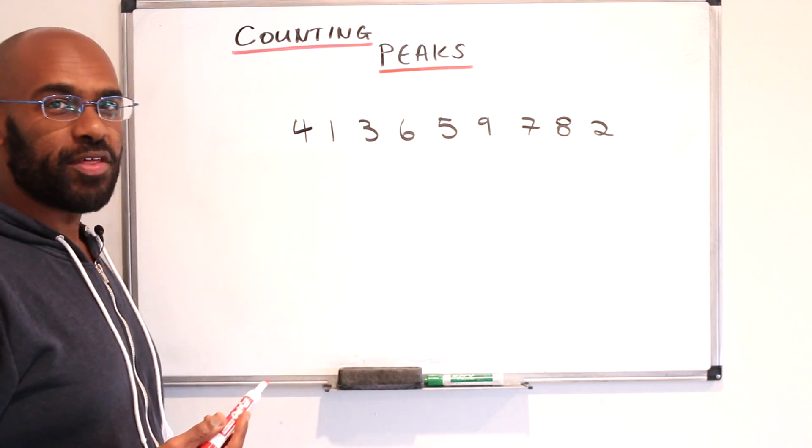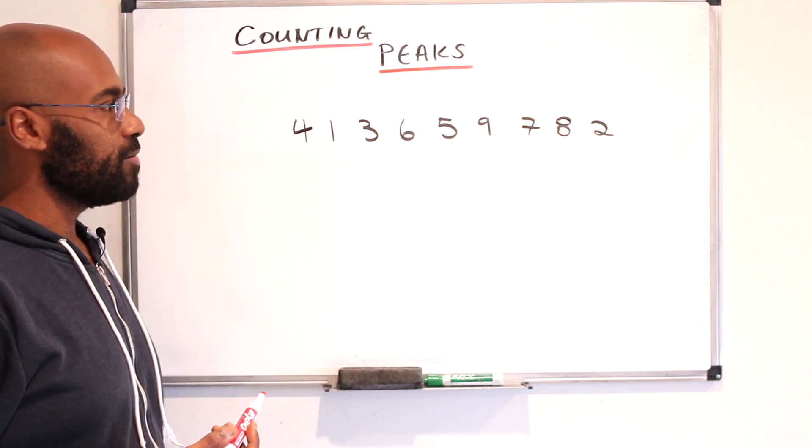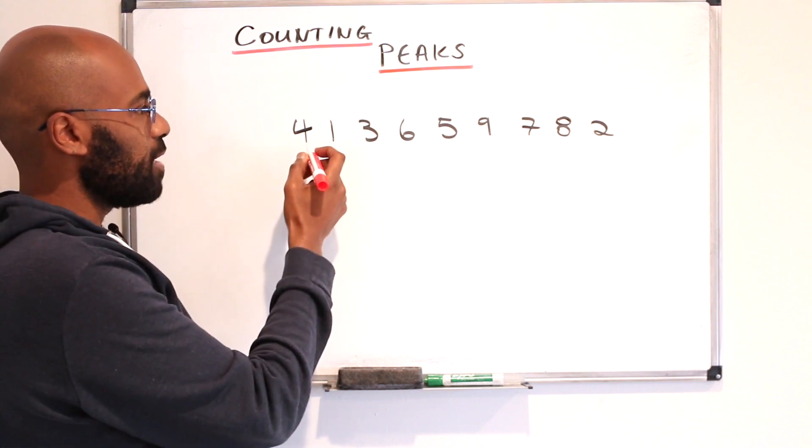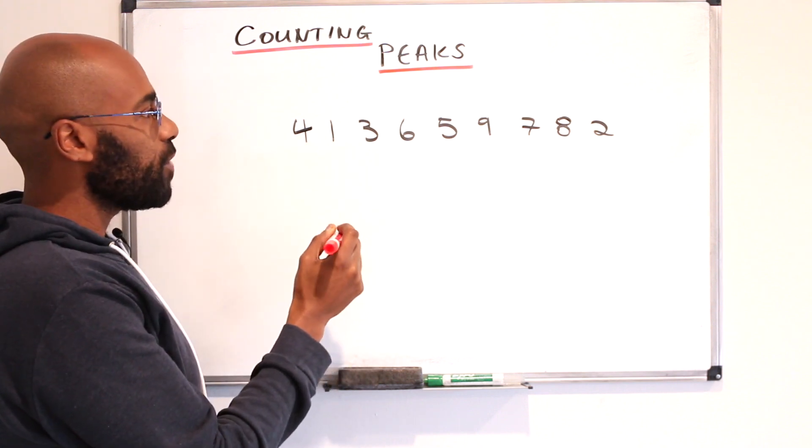Here, I've listed a rearrangement of the numbers between 1 and 9. Notice some of these numbers are larger than all the numbers next to them.